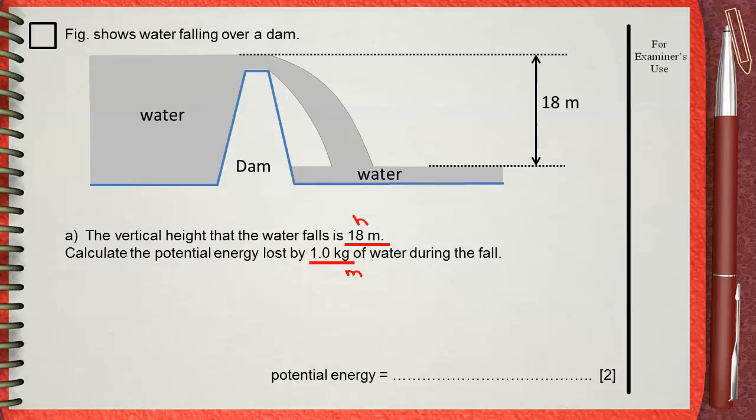Remember this because this will be used in the next question. And he is asking for the potential energy. Potential energy equals mgh. M is the mass, g is the constant and the acceleration due to gravity, h is the height.